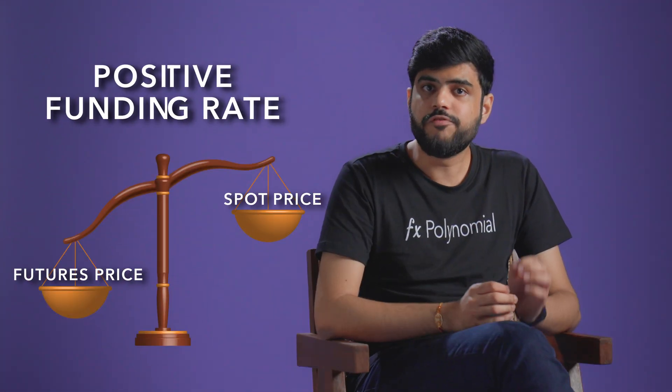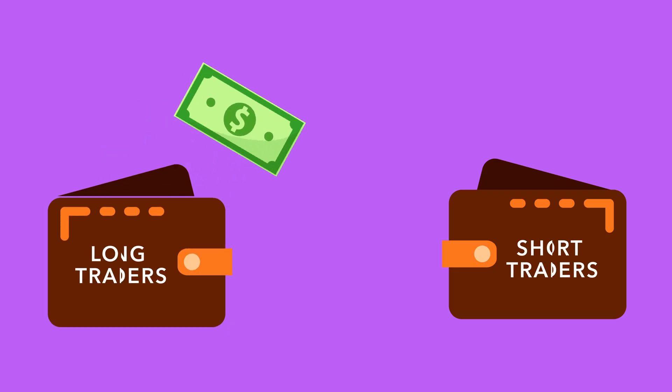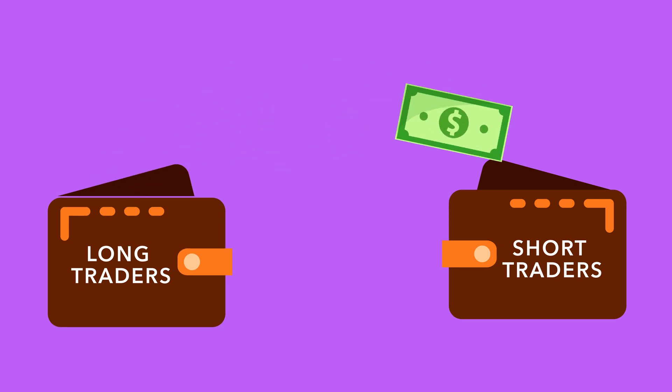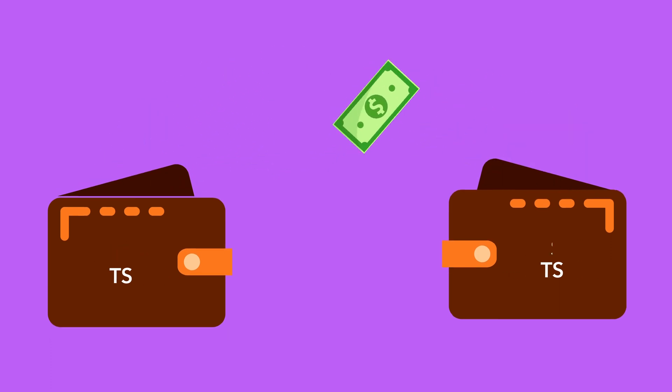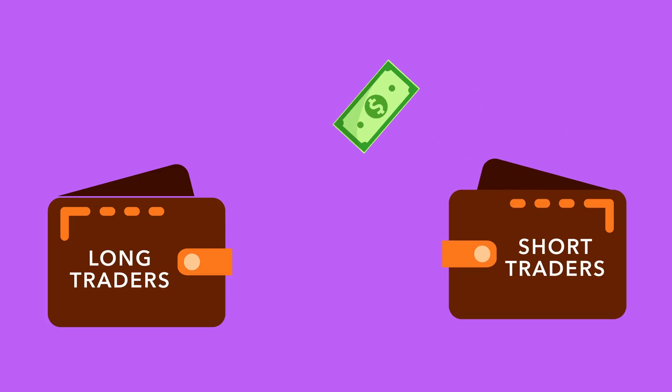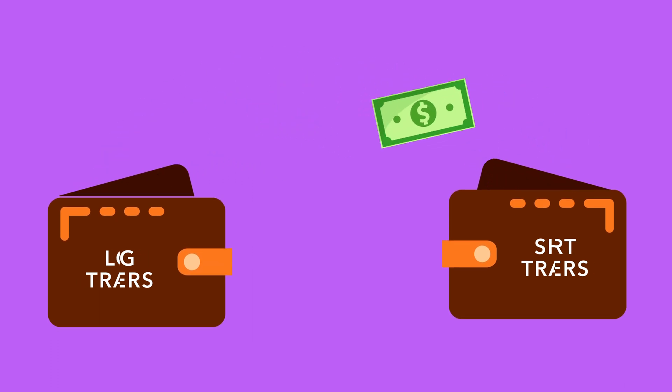If the futures price is higher than the spot price, the funding rate is positive and traders with long positions need to pay a funding fee to those with short positions, thus incentivizing more traders to short the markets and bring down the futures price until it is at par with the spot price. Similarly, when the futures price is lower than the spot price, the funding rate is negative and short traders need to pay a funding fee to the long traders, which incentivizes more long positions in the market and brings the futures price up to the levels of the spot price.